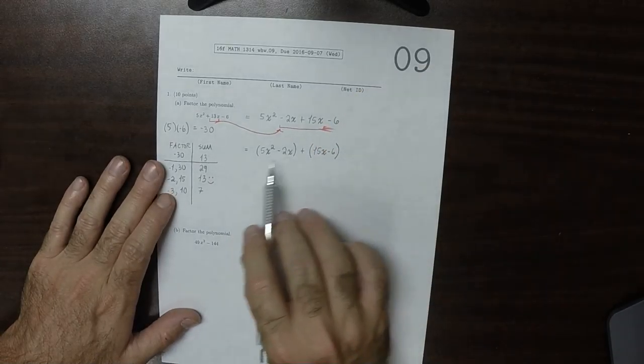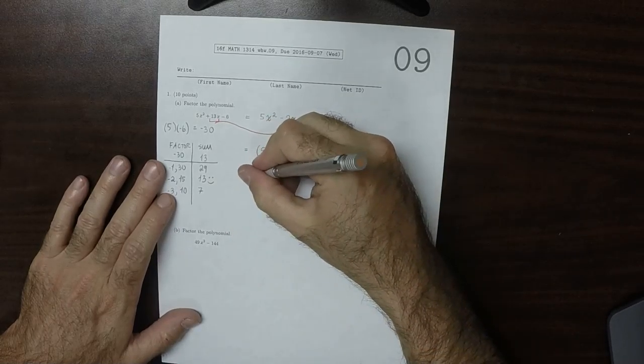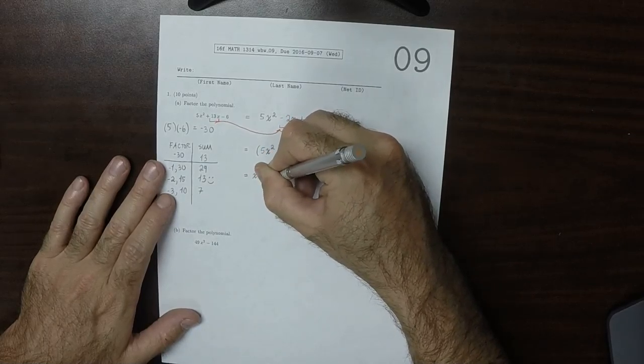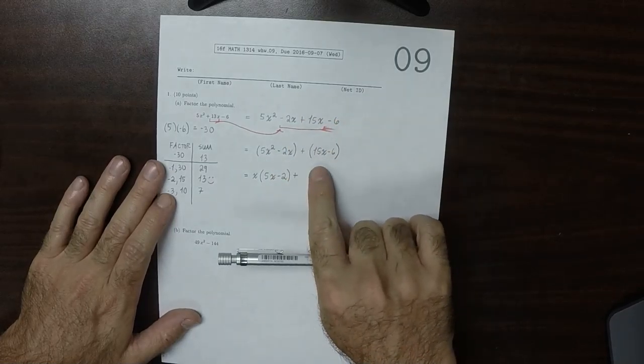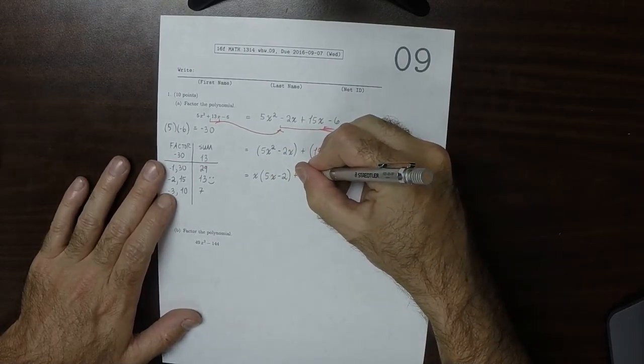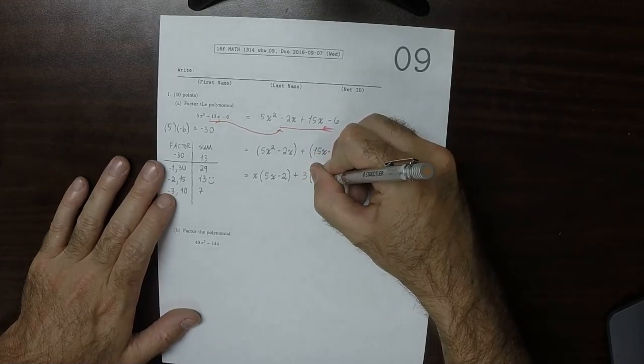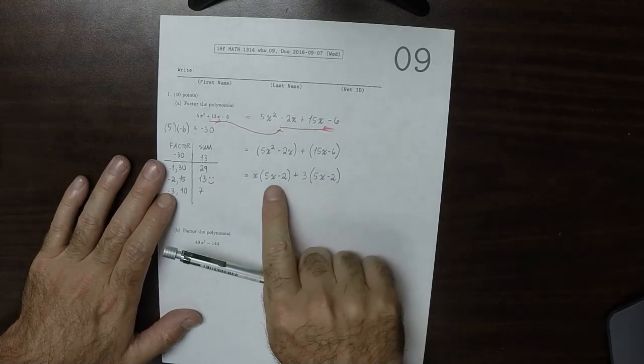And within each group, we're going to factor out the greatest common factor. So that would be x for this one, so x multiplied by 5x minus 2, and then plus, the greatest common factor in here is 3, so 3 multiplied by 5x minus 2. Notice that 5x minus 2 is now common.